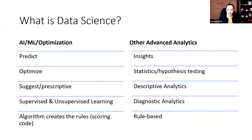I'm going to start with what data science is from the perspective of most data scientists — and this is not universal, but it's helpful to know. Data is in the name, but really data scientists focus on predicting, optimizing, suggesting things like next best action — what's sometimes called prescriptive analytics. So both predicting what might happen next and suggesting the next best action in a decision support role.